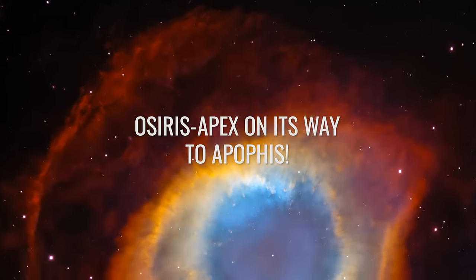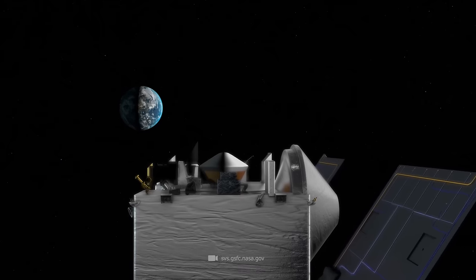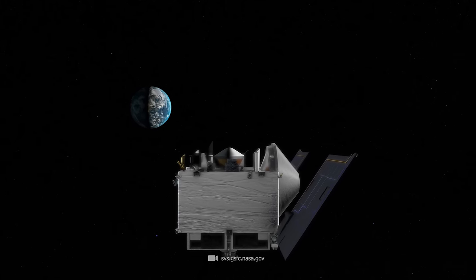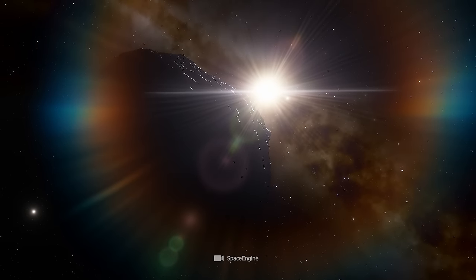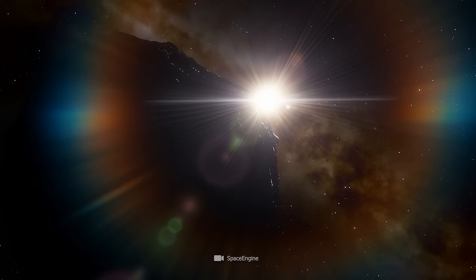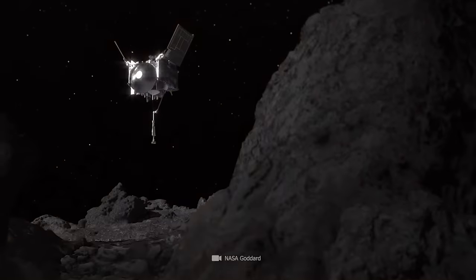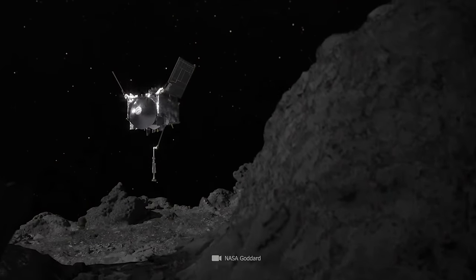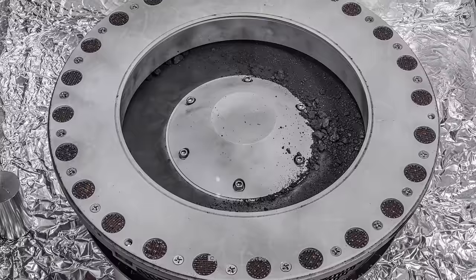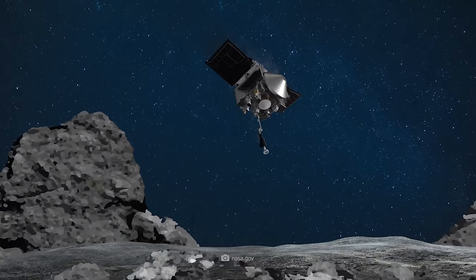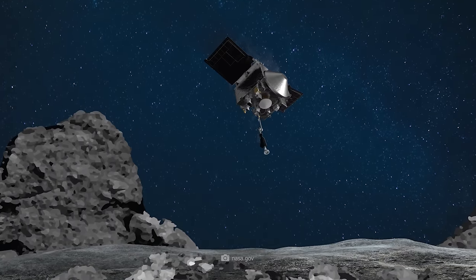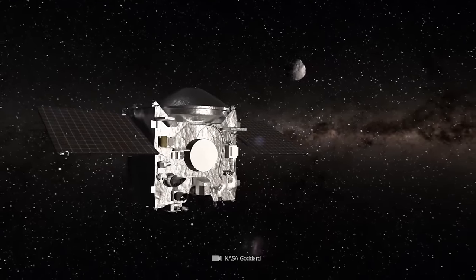OSIRIS APEX is on its way to Apophis. OSIRIS is a top-class probe that, after an extremely successful flight to the equally dangerous asteroid Bennu, is now on its way to Apophis. In 2020, the OSIRIS-REx mission successfully collected samples from Bennu, which arrived in the USA in 2023. The reusable probe then became the OSIRIS-APEX mission for asteroid exploration expedition.